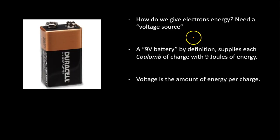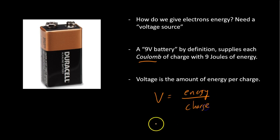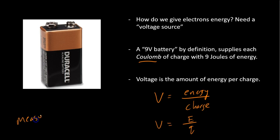If we want to give a circuit energy — if we want to give electrons energy — we need a voltage source, and something like a battery will do that. A 9-volt battery gives every coulomb of charge 9 joules of energy. Voltage has an equation: it's the amount of energy per charge. V equals E over Q, where Q is the unit for charge. We measure voltage in volts. So a 9-volt battery gives every coulomb of charge 9 joules worth of energy.